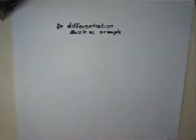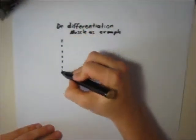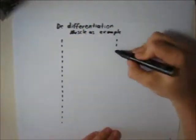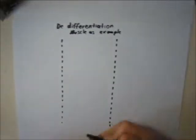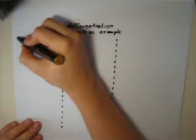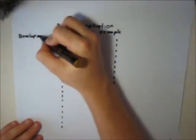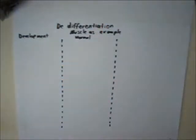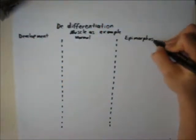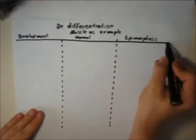This example of cell de-differentiation is of myocytes in the salamander limb. During cell development,